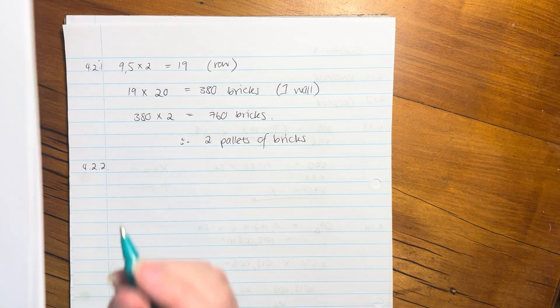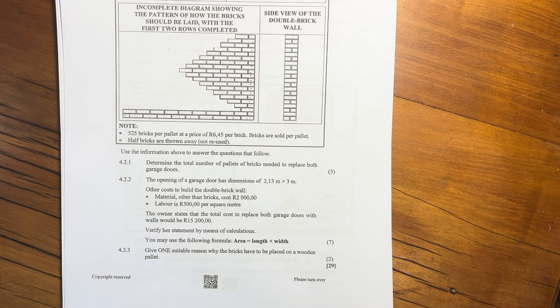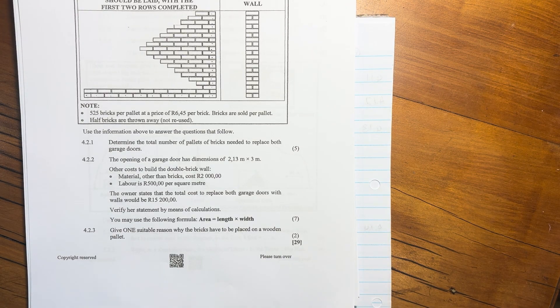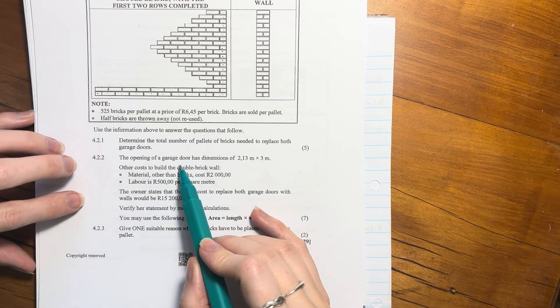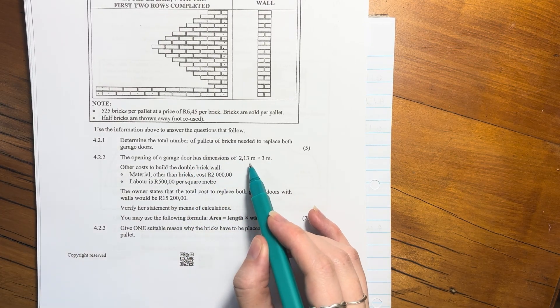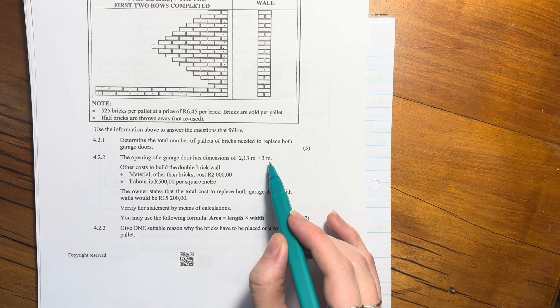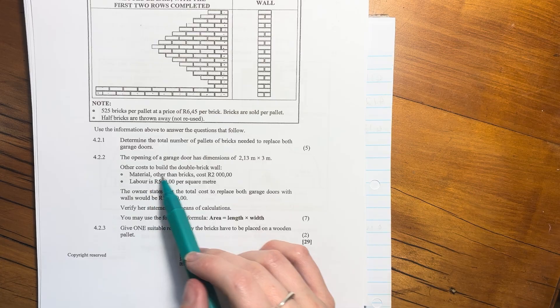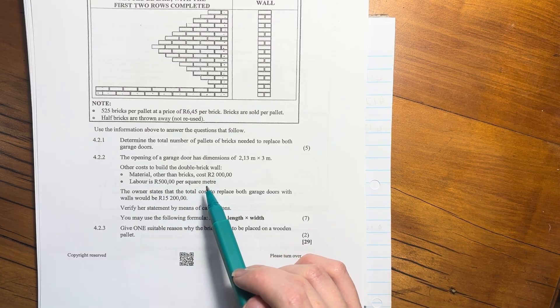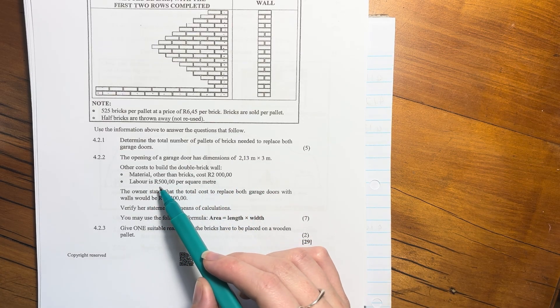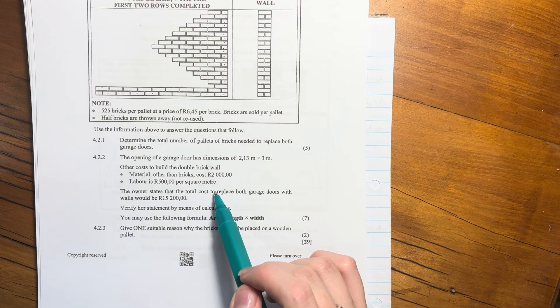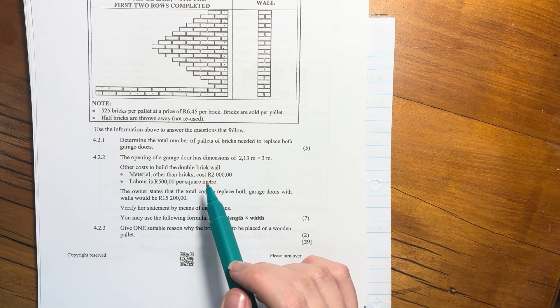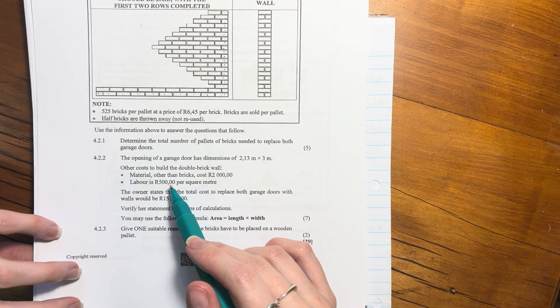Next question, a little bit more involved but we can do this. It's one of our costing questions. The opening of a garage door has dimensions 2.13 times 3 meters. Other costs to build the double brick wall include material other than bricks, so that's like cement and things like that, 2000 rand, and then labor is 500 rand per square meter.